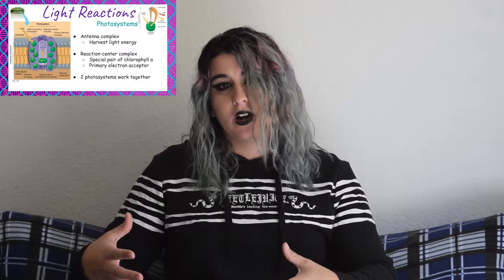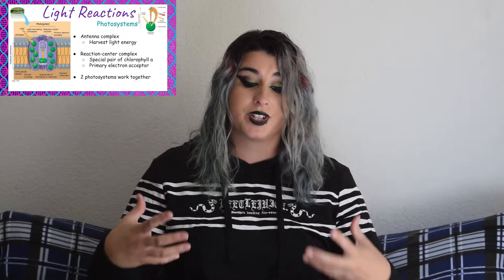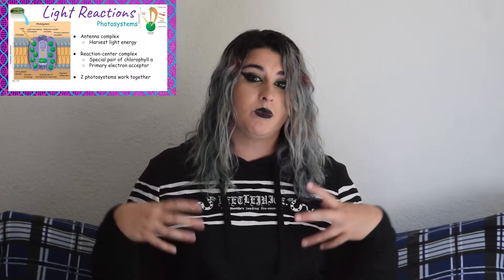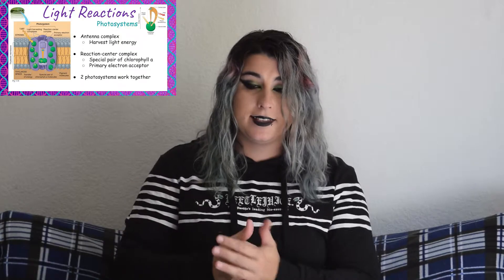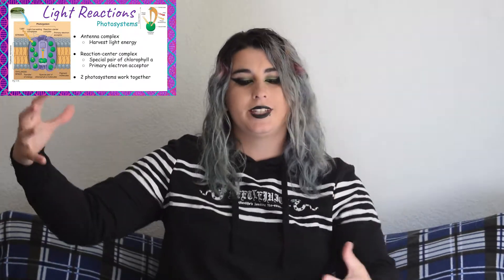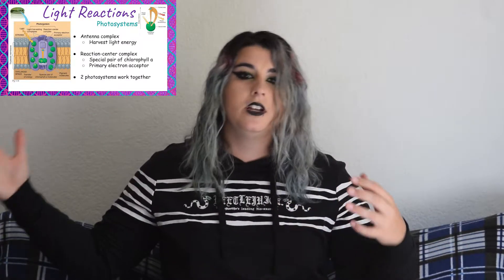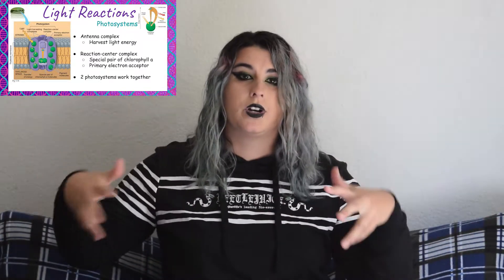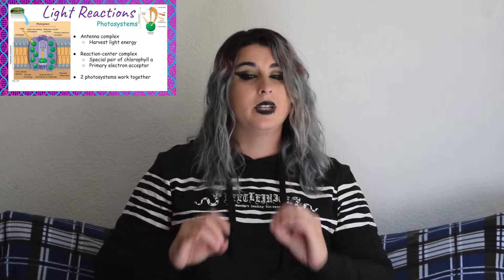In the reaction center complex, besides the special chlorophyll A pair, we also have what's known as the primary electron receptor. The way this works is that when a photon of light hits that chlorophyll molecule, the electron gets really excited and jumps up into a really high energy state where it can be accepted by that primary electron acceptor and moved down an electron transport chain. Then eventually things will come back to the ground state — you'll lose some energy as heat, you'll lose energy again as fluorescence, and then everything will come back to the ground state.